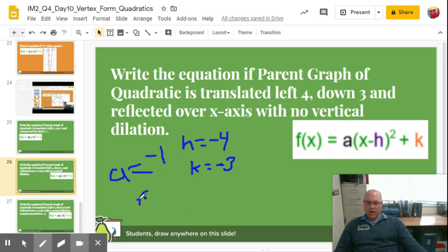So here we go. So f of x equals negative 1, parentheses, x minus negative 4. So that becomes x plus 4 squared and then minus 3.